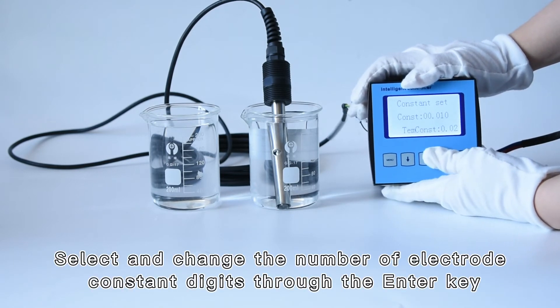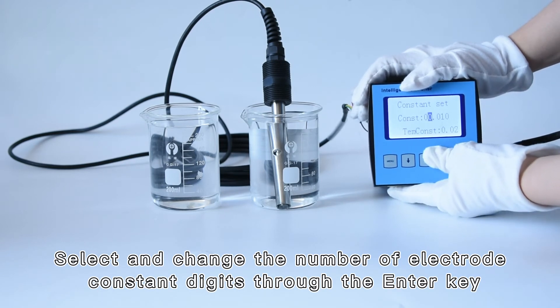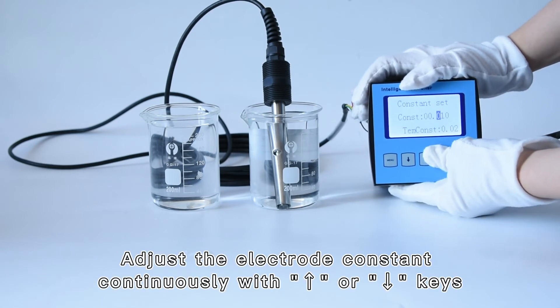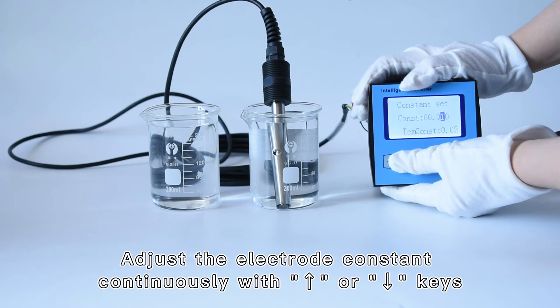Select and change the number of electrode constant digits through the enter key. Adjust the electrode constant continuously with the arrow keys.